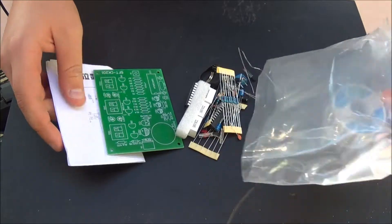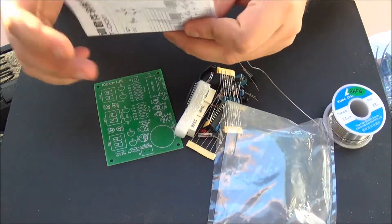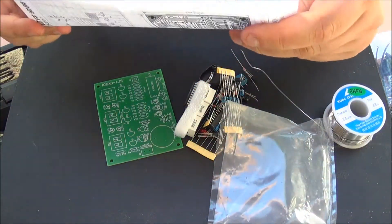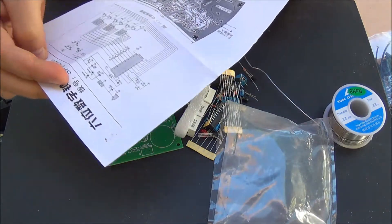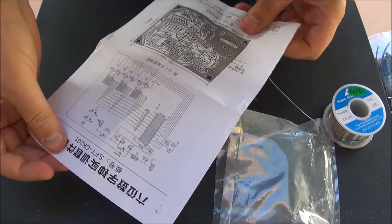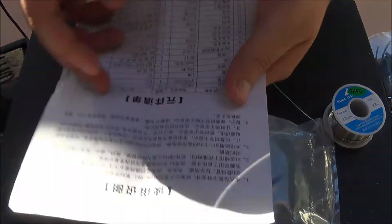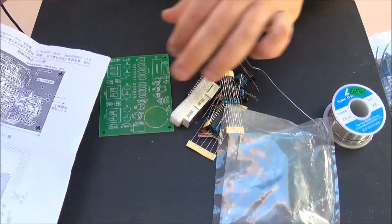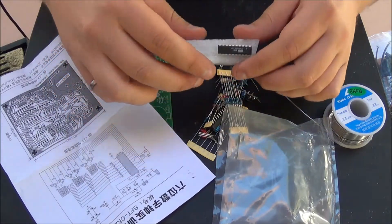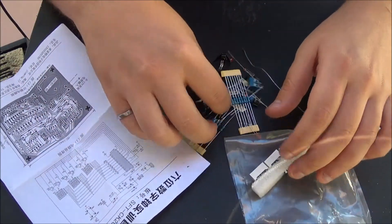I'm going to post a link down below if you want to follow and solder the kit yourself. As you can see the instructions come entirely in Chinese and there's no explanations besides the markings on the PCB. So let's just go straight into the soldering process.